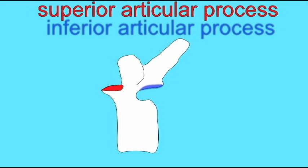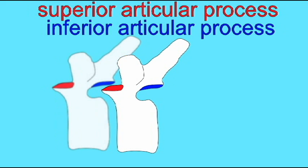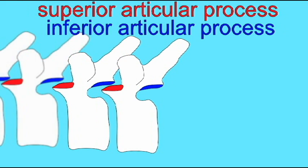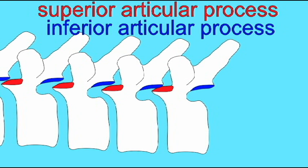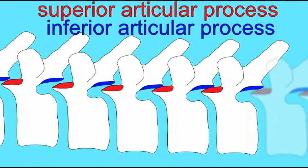And this is allowed because each vertebra has a superior articular process, which allows it to articulate with the vertebra which is superior to it, and an inferior articular process, which allows it to articulate or move against the vertebra which is inferior to it.